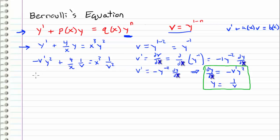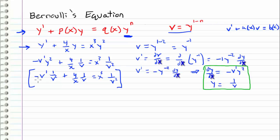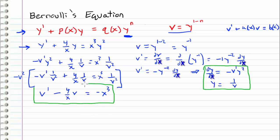Substituting y = 1/v throughout, we get: negative v prime times 1/v squared, plus 4/x times 1/v, equals x cubed times 1/v squared. To put this in standard form with a coefficient of 1 on v prime, we multiply the entire equation by negative v squared. That clears the coefficient on v prime and gives us: v prime minus 4/x · v equals negative x cubed.